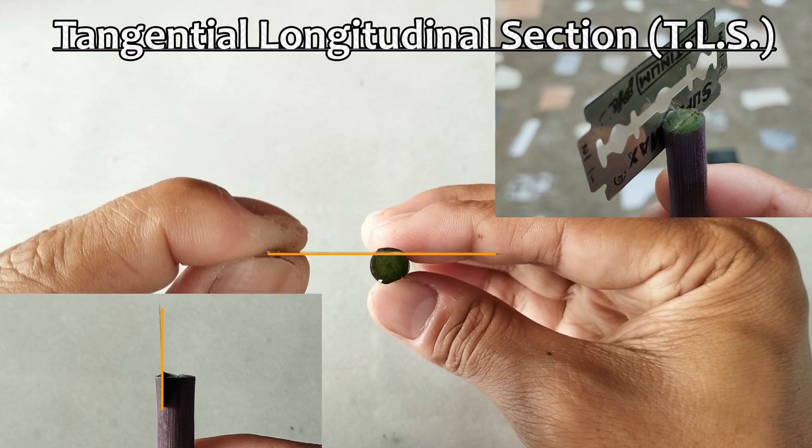Sectioning made by passing the razor longitudinally through any plane other than through the center produces a tangential longitudinal section or TLS.